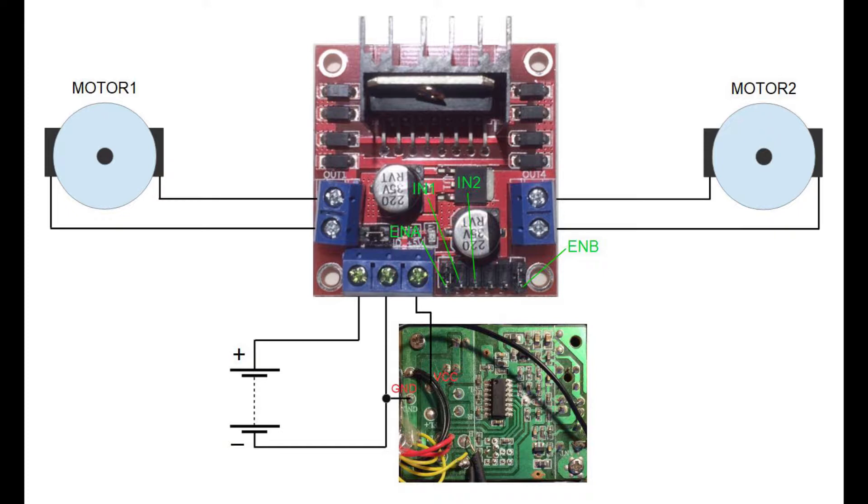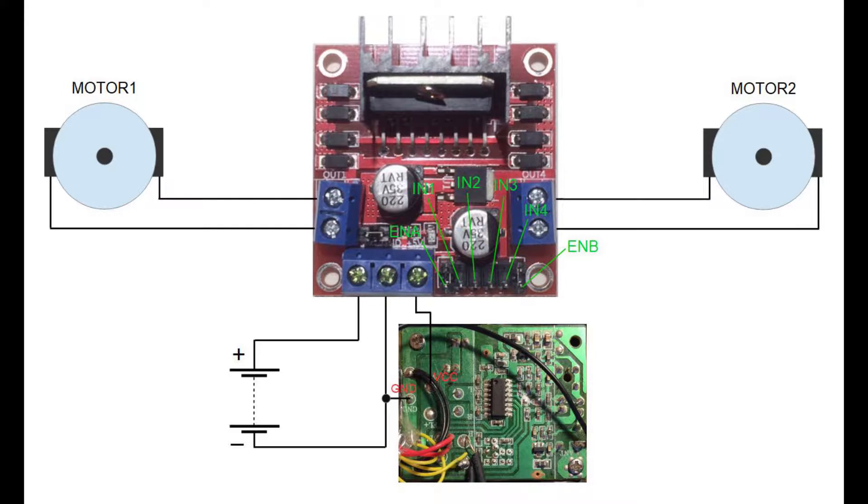If on both pins there will be 0 volts the motor won't spin. Input 3 and input 4 has the same purpose as input 1 and input 2, only difference is that input 3 and input 4 is used to control the second motor.